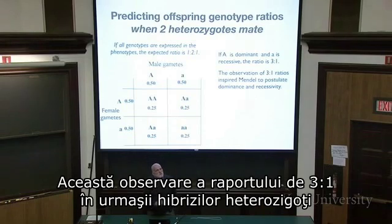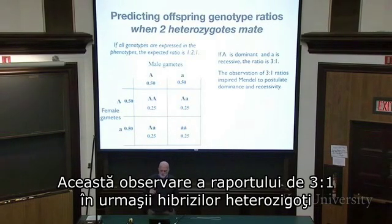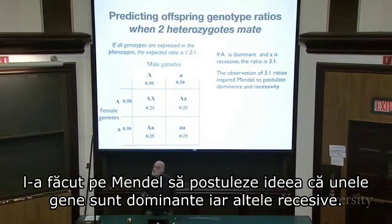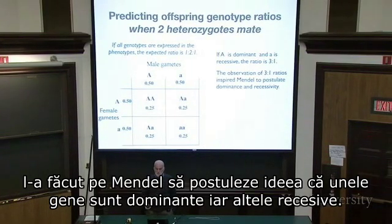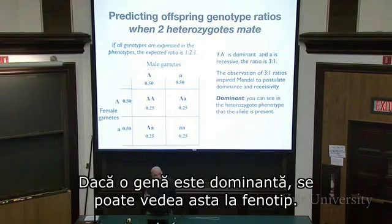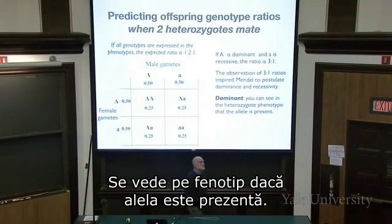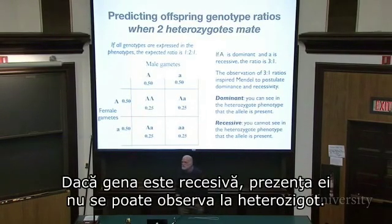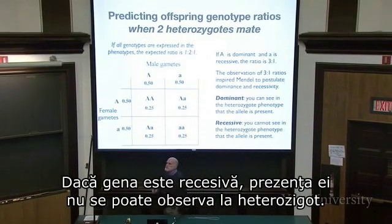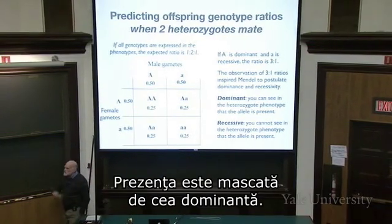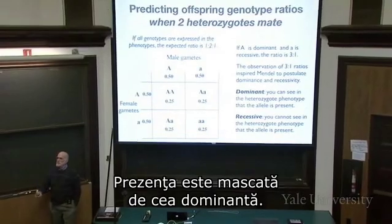It was the observation of 3 to 1 ratios in the offspring of heterozygote crosses that caused Mendel to postulate that some genes are dominant and some are recessive. If a gene is dominant, you can see that fact in the phenotype — the allele's presence is visible. If it's recessive, you can't see the presence of the gene in the heterozygote; its presence is covered up by the dominant one.